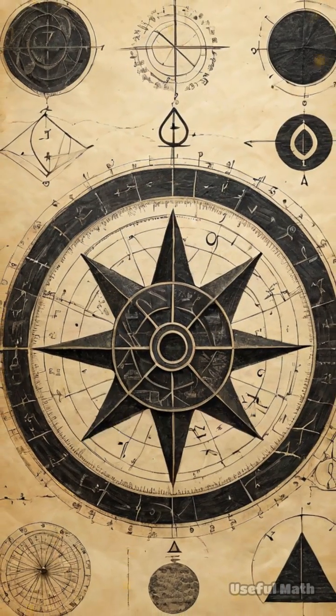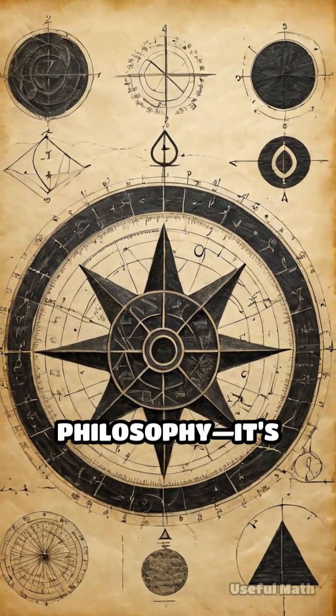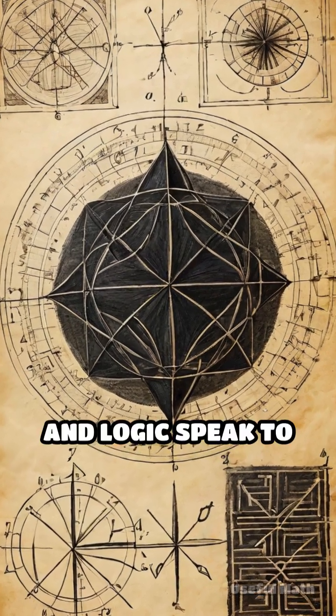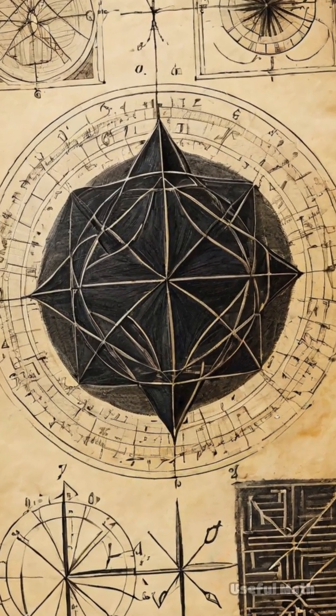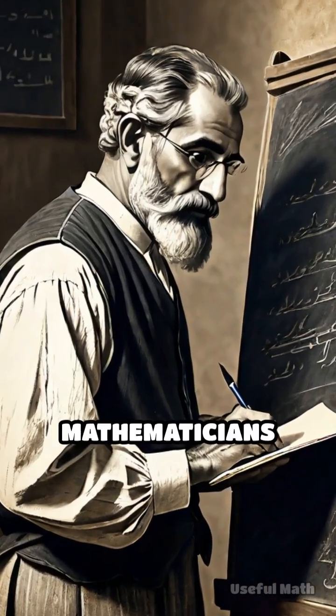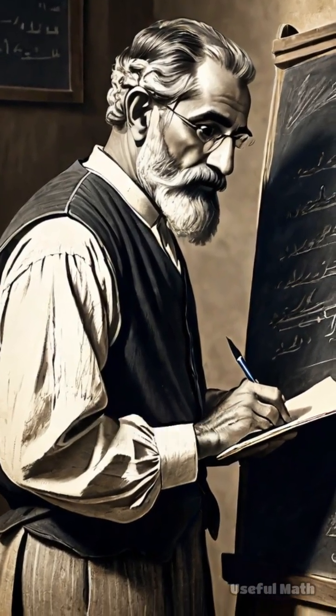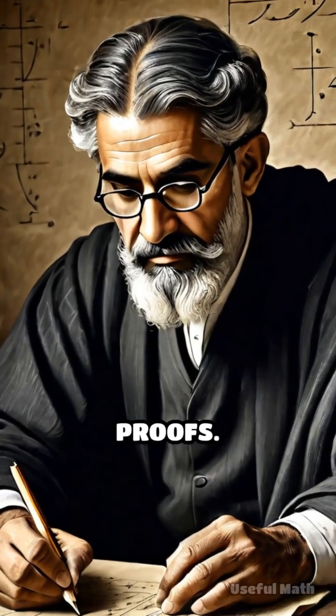The hidden structure of mathematics isn't abstract philosophy. It's how number theory, topology, analysis and logic speak to each other. Recognizing these patterns lets mathematicians reframe hard questions, find new connections, and devise elegant proofs.